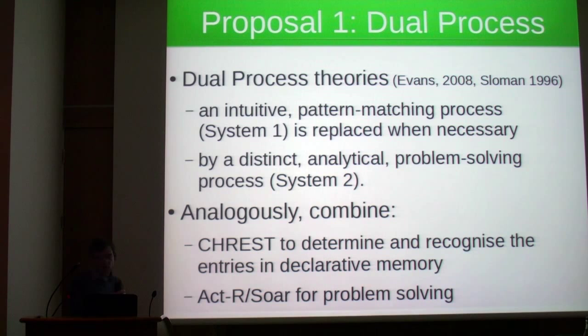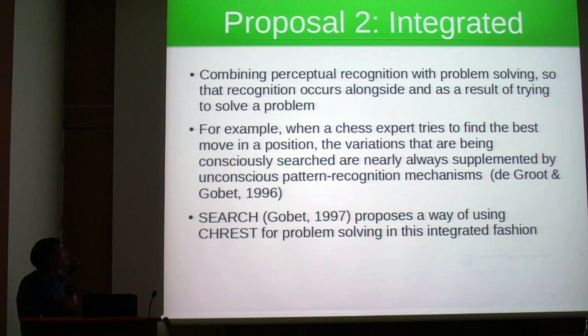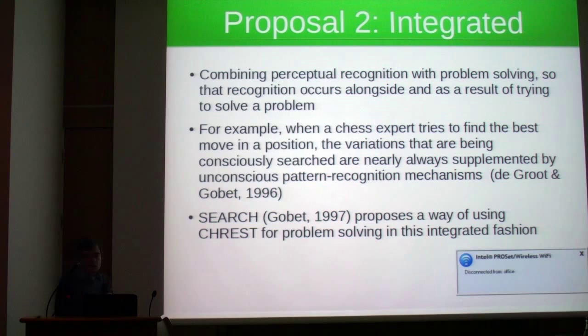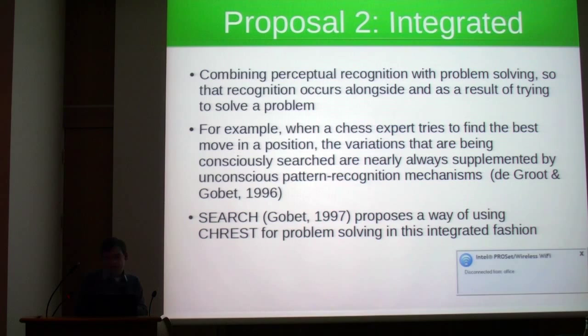More radically, we might suggest that the two processes should be more integrated, so that perceptual recognition and problem solving occur alongside each other. When a chess expert tries to find a move in a position, he looks at variations, but as he does the problem solving and analyzes positions, he's always doing pattern recognition alongside. A suggestion of how this approach might work was the SEARCH model proposed in 1997, which is a process model of how CREST can do this sort of problem solving — something we're working on implementing at the moment.